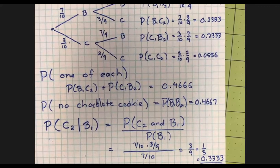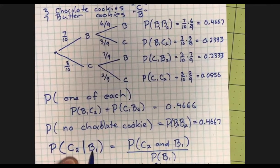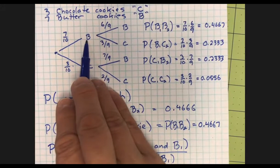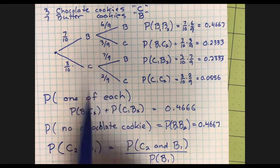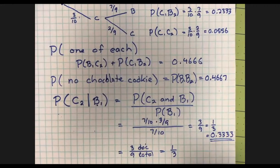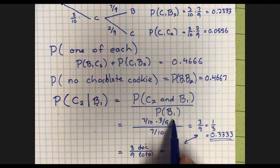Ordinarily the probability of getting a chocolate cookie is 3/10, but now it's 1/3 — because I picked a butter cookie, I have a better chance of getting a chocolate cookie the second time. You can also see this directly: if you know you picked a butter cookie first, there are three chocolate cookies left among nine, so 3/9 equals 1/3. Either way — from the formula or from counting — you get the same answer.